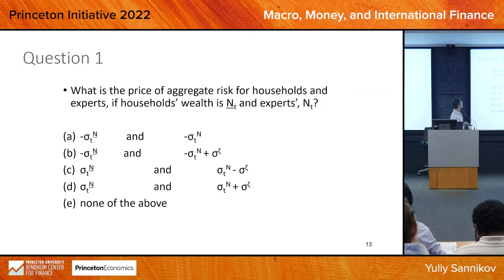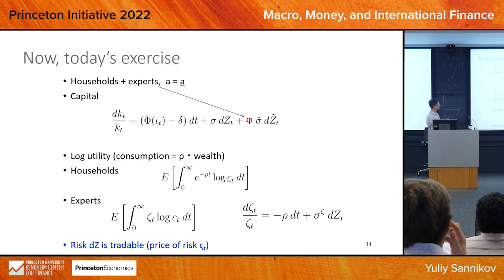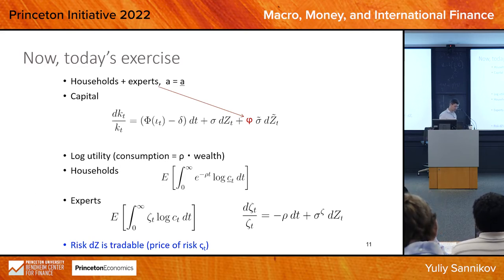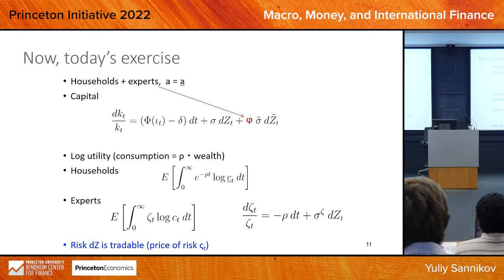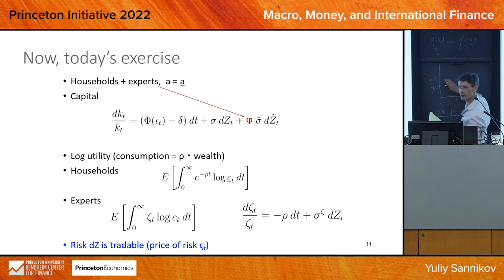Let's go ahead and try to solve this model. I'm going to ask a series of questions. Any clarifying questions about the model? The number you need for Slido is 907155.